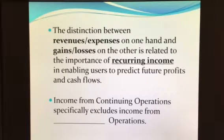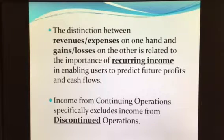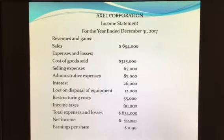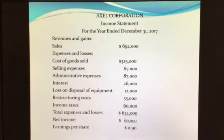For the most part, net income for a given company by default represents what we call income from continuing operations, which specifically excludes income from discontinued operations. Companies may, from time to time, get out of one line of business — say, divesting a subsidiary or division. That creates particular challenges if we want to provide information useful in decision-making, allowing users to make judgments about future cash flows and identify what elements of income are recurring versus non-recurring.